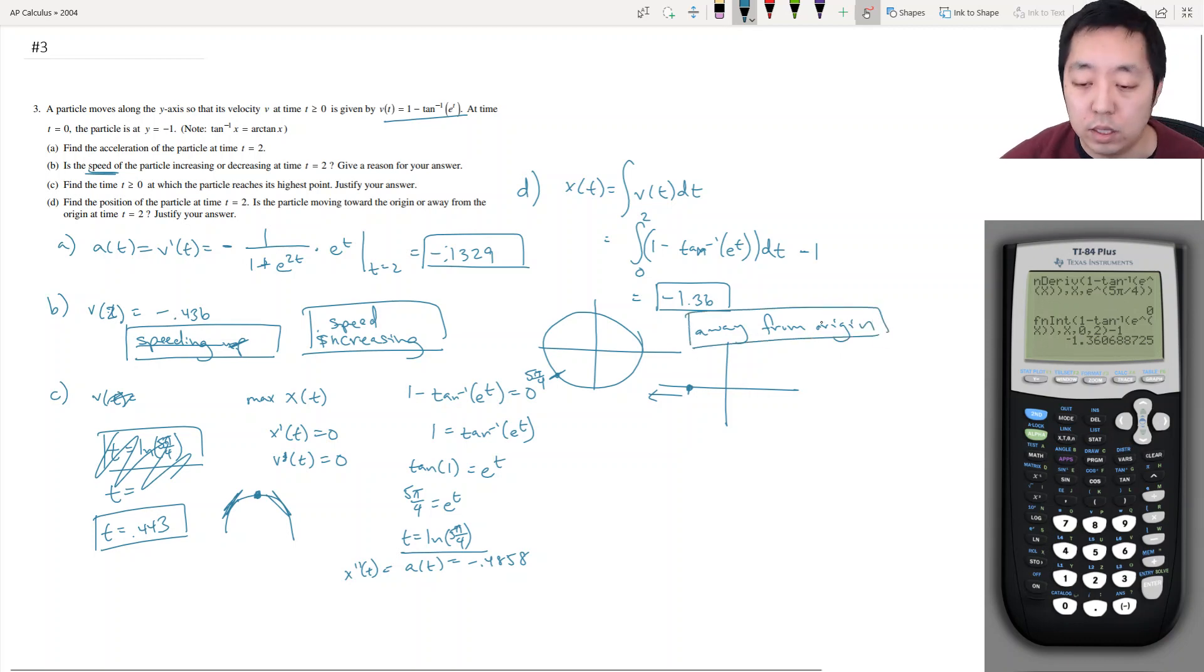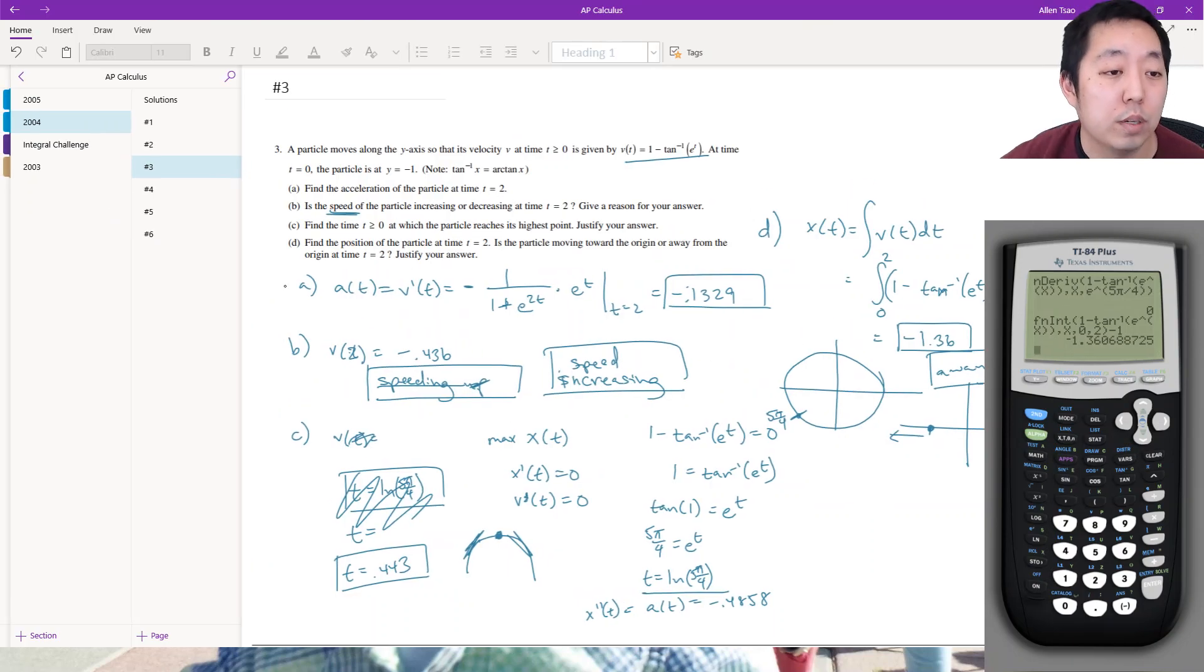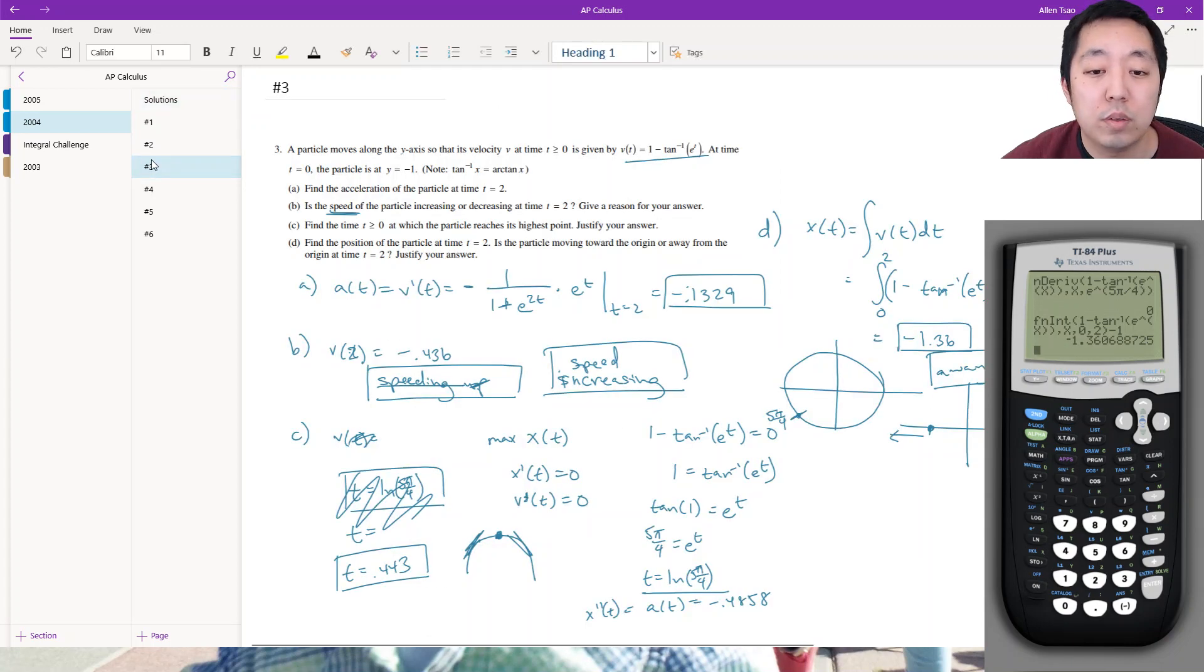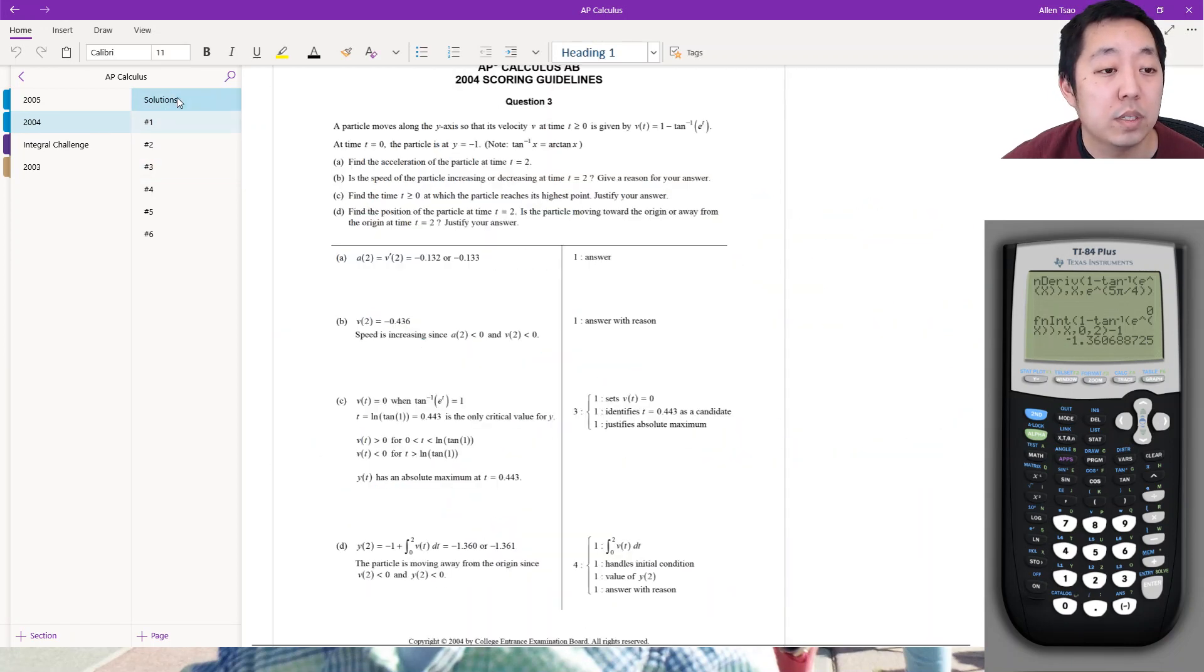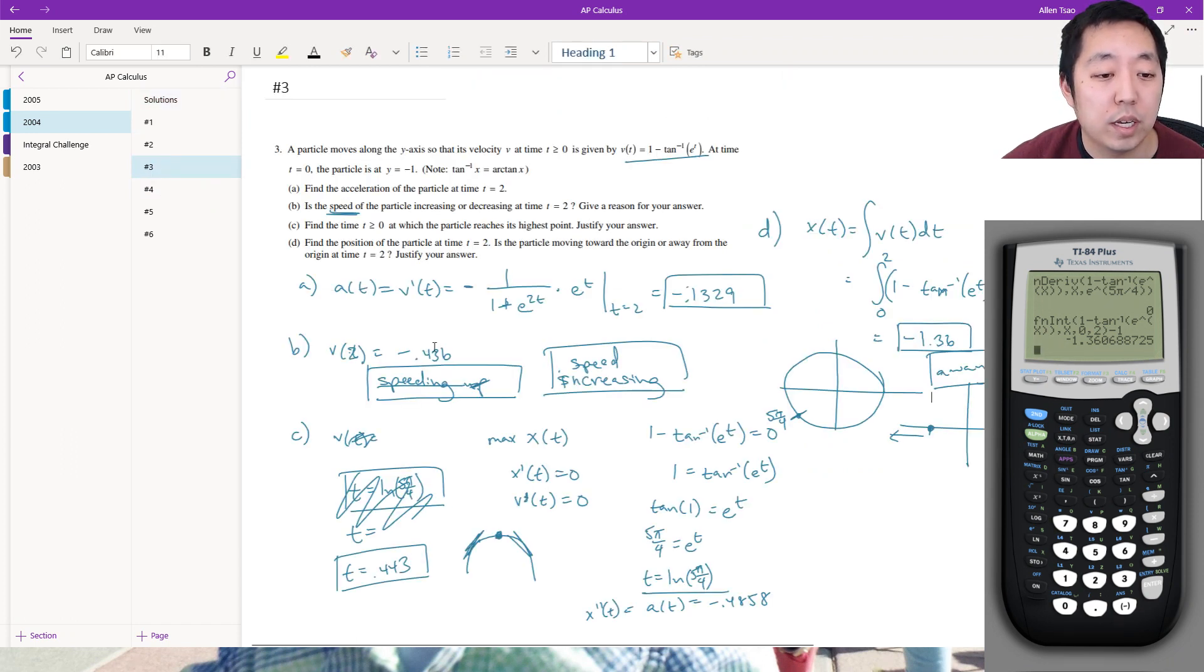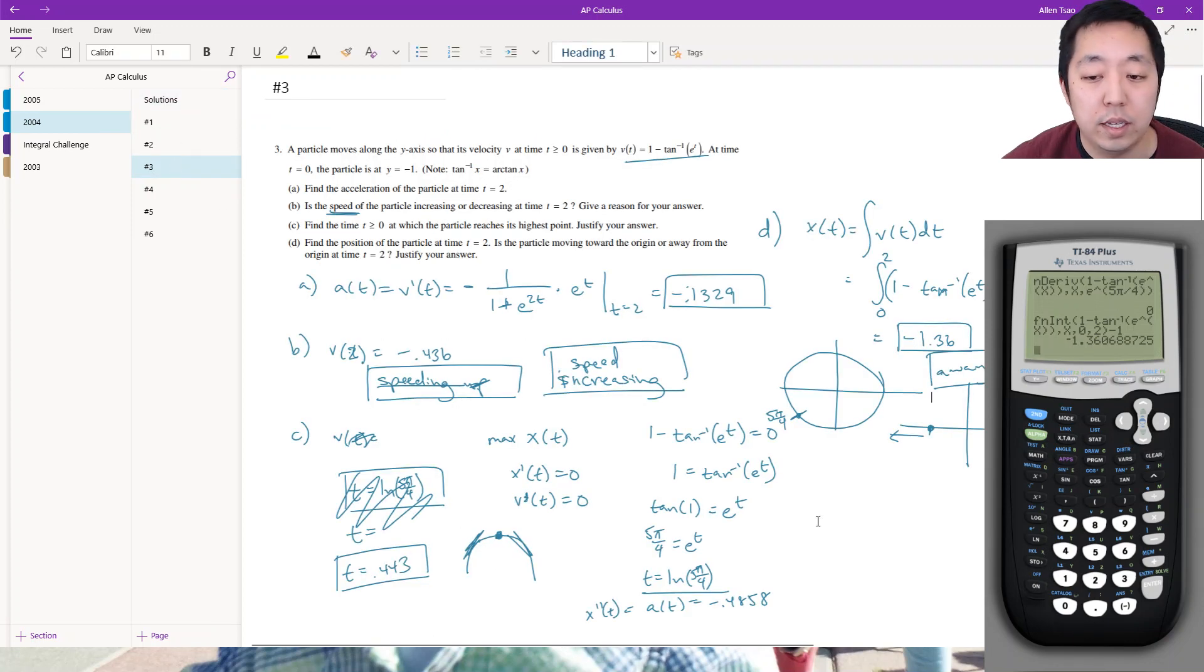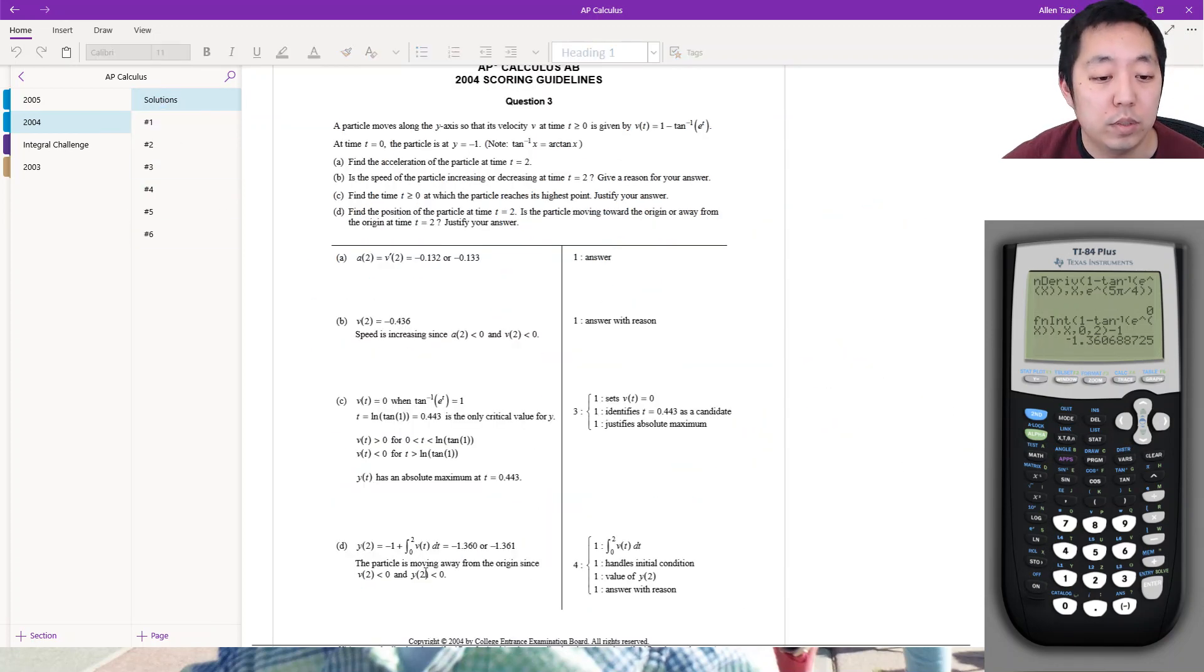Okay. All right. That one took a little bit longer just because I was having some technical issues on part b. But let's take a look at the solutions. So negative 0.1329. That's what I got. Negative 0.436. So that's what I got here. Right? Negative 0.436. And the speed is increasing. Ln of tan of 1. Oh. I was tangent of 1, not inverse tangent. 0.443. Okay. Good. And then this one is negative 1.36. Okay. Cool. In case we got all the answers right. So hope you found it helpful. I'll see you in the next video.